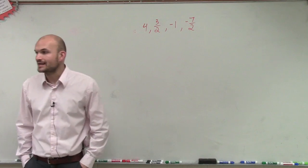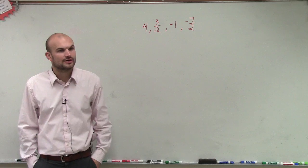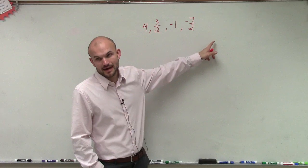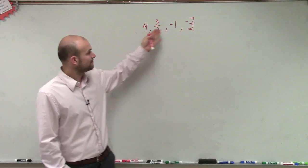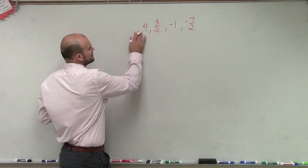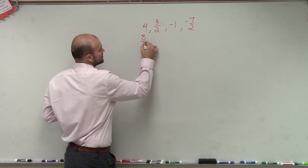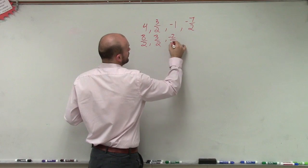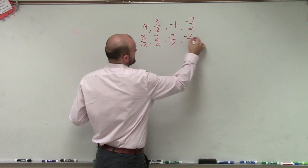So therefore I can easily subtract them. I notice that they have a denominator of 2. So let's make this 4, negative 1, rewrite them with a base of 2. So therefore, this can be rewritten as 8 over 2, 3 over 2, negative 2 over 2, and negative 7 over 2.